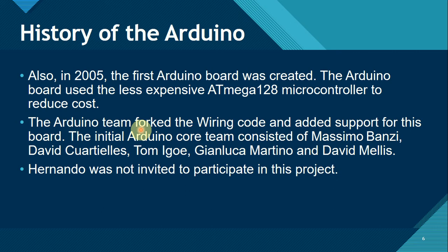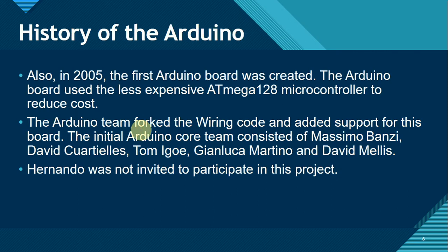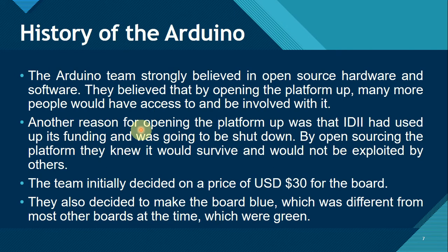The Arduino team strongly believed in open source hardware and software. They believed that by opening the platform up, many more people would have access to and be involved with it. Another reason was that IDII had used up its funding and was going to be shut down; by open sourcing the platform, they knew it would survive. The team initially decided on a price of $30 US dollars for the board, and also decided to make the board blue, which was different from most other boards at the time, which were green.